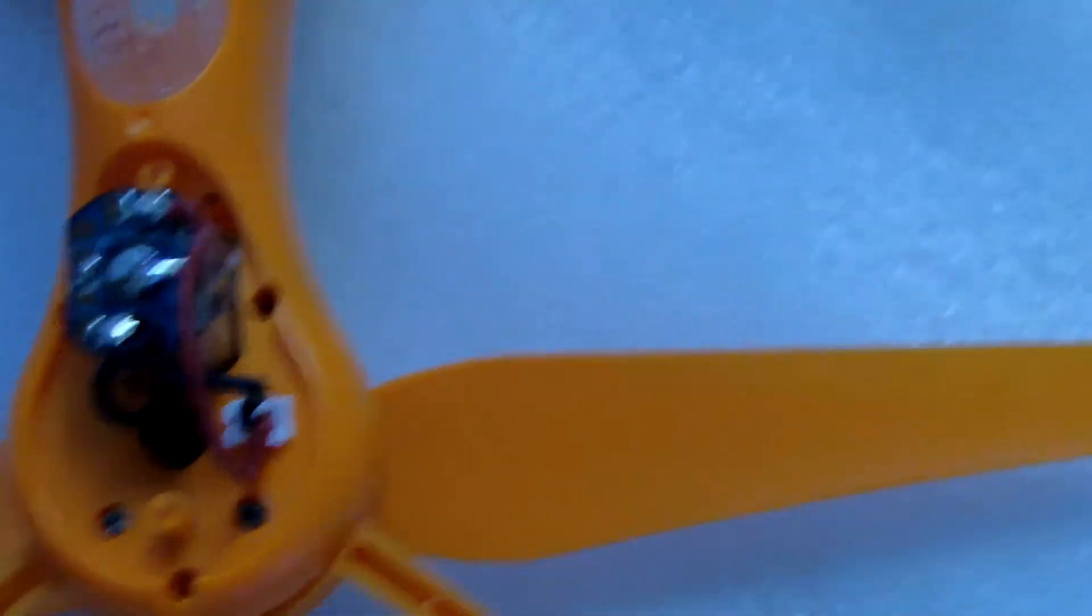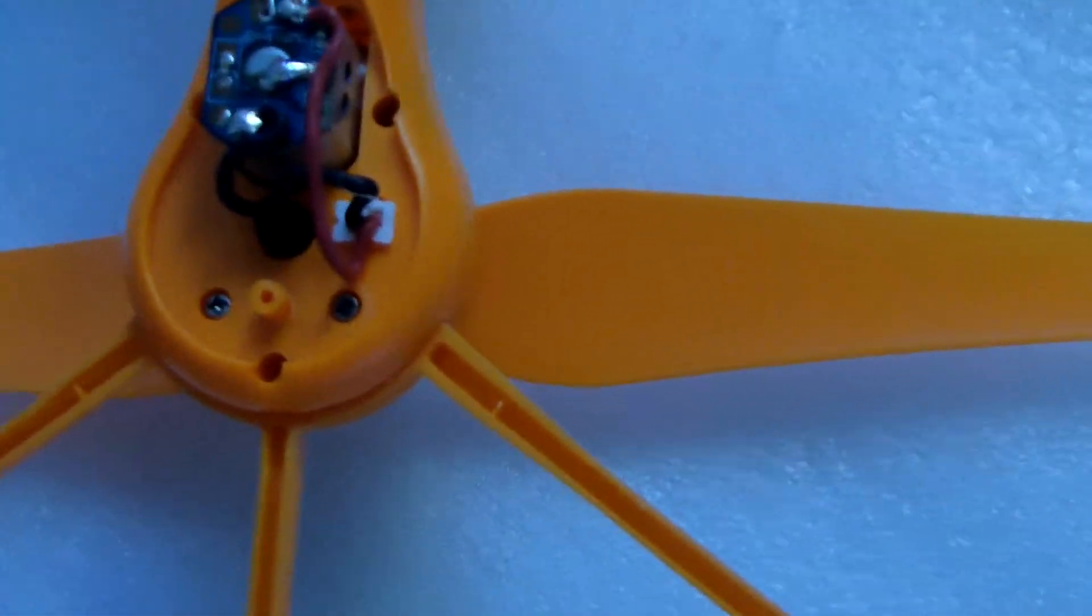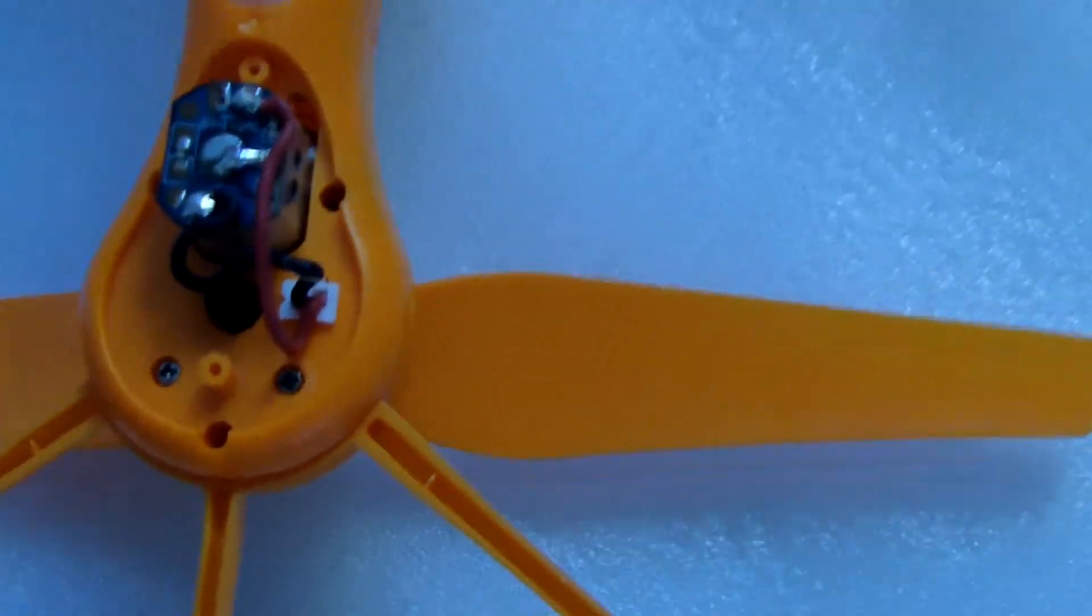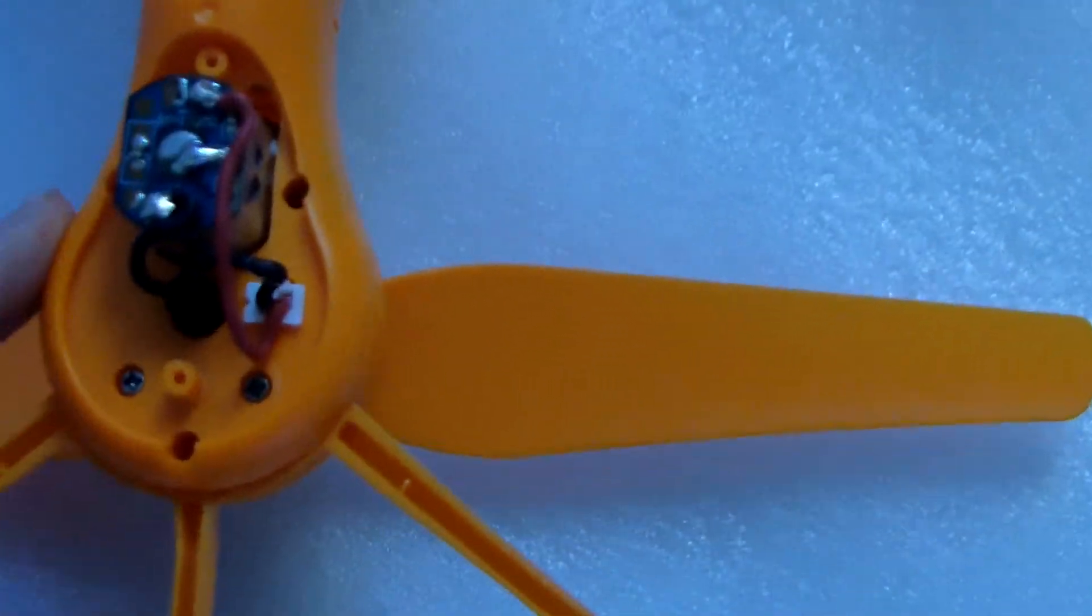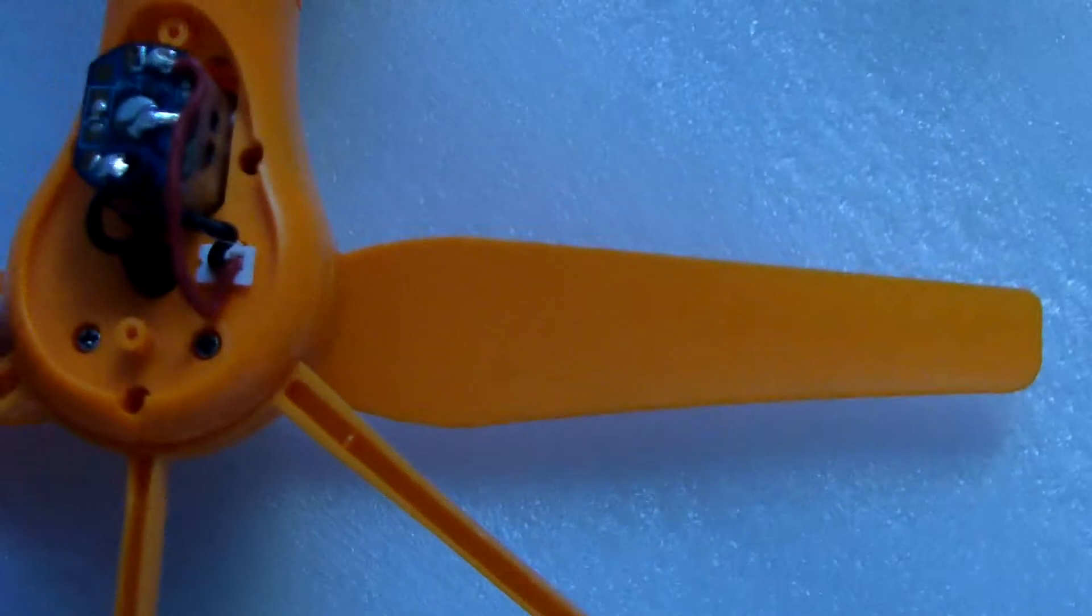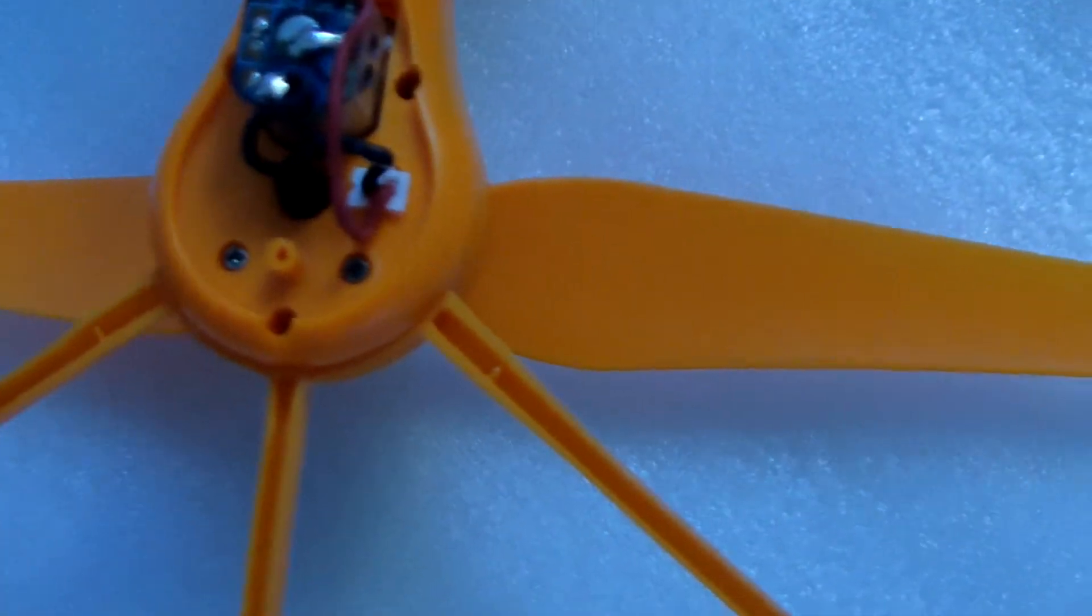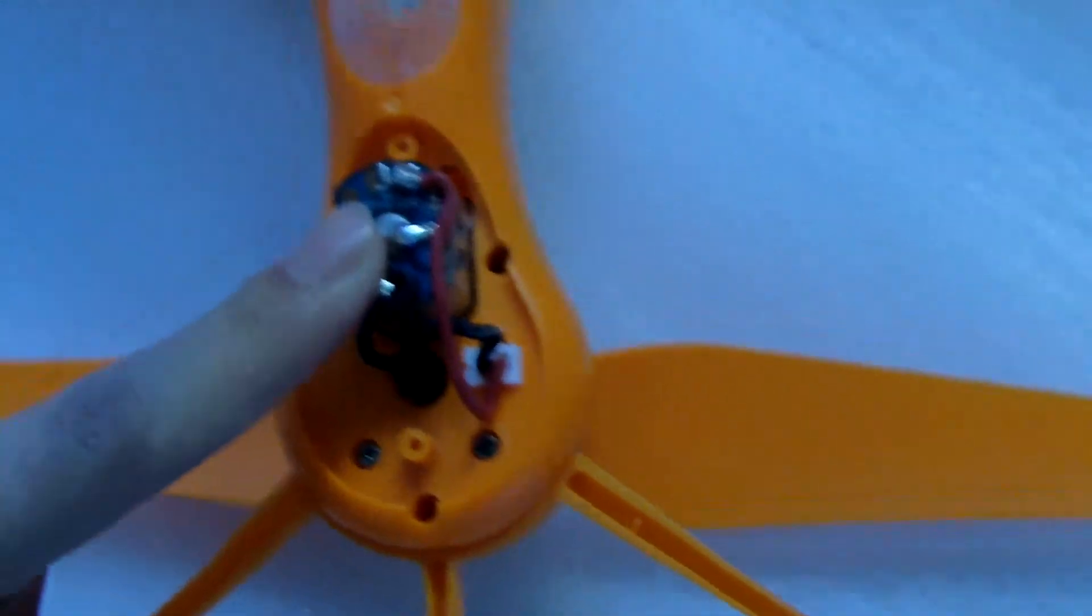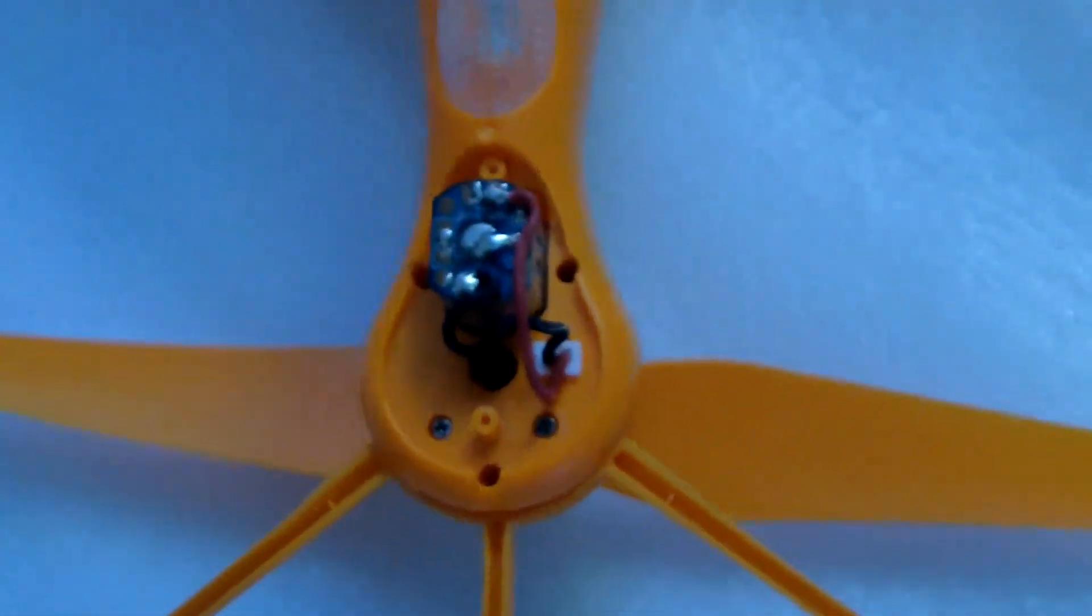So when you change the motor, you need to make sure first that the letters on the axis must be the same as the letter on the blade. And then make sure the color of the wires is the same as the old one. If not, then your helicopter can't fly. Got it?